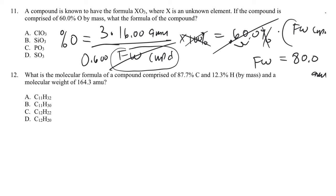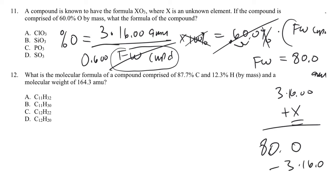That formula weight contains 3 times the mass of oxygen, so 80.0 equals 3 times 16.00 plus the mass of X. Subtracting 3 times 16 from 80 gives me 32.00 AMU as the mass of X. So if X and the 3 O's total 80, the molar mass of X is 32. Sulfur has a molar mass of 32, so this is consistent with the formula SO3.